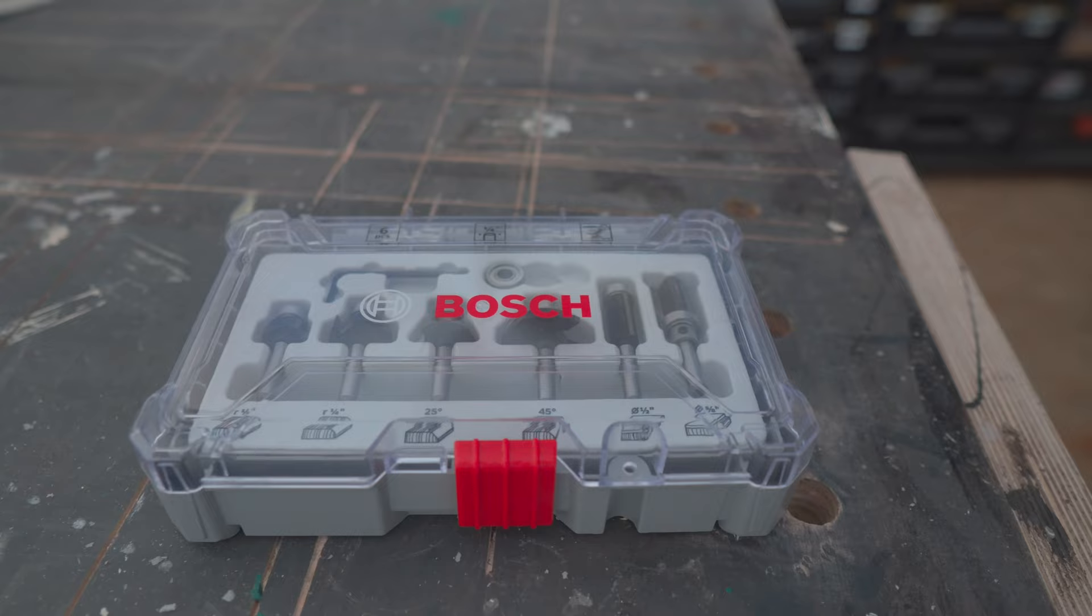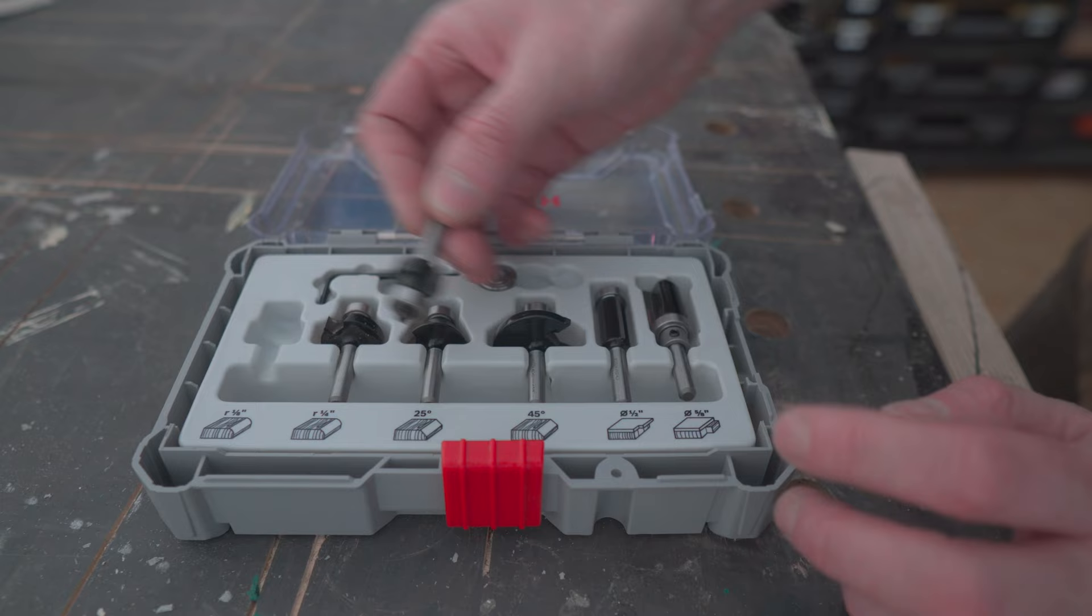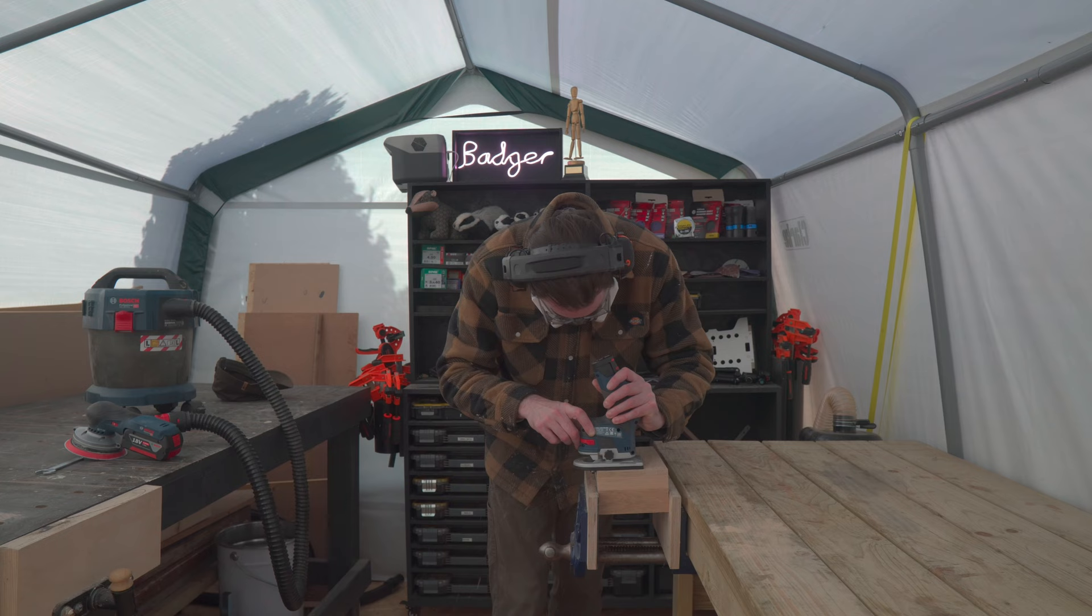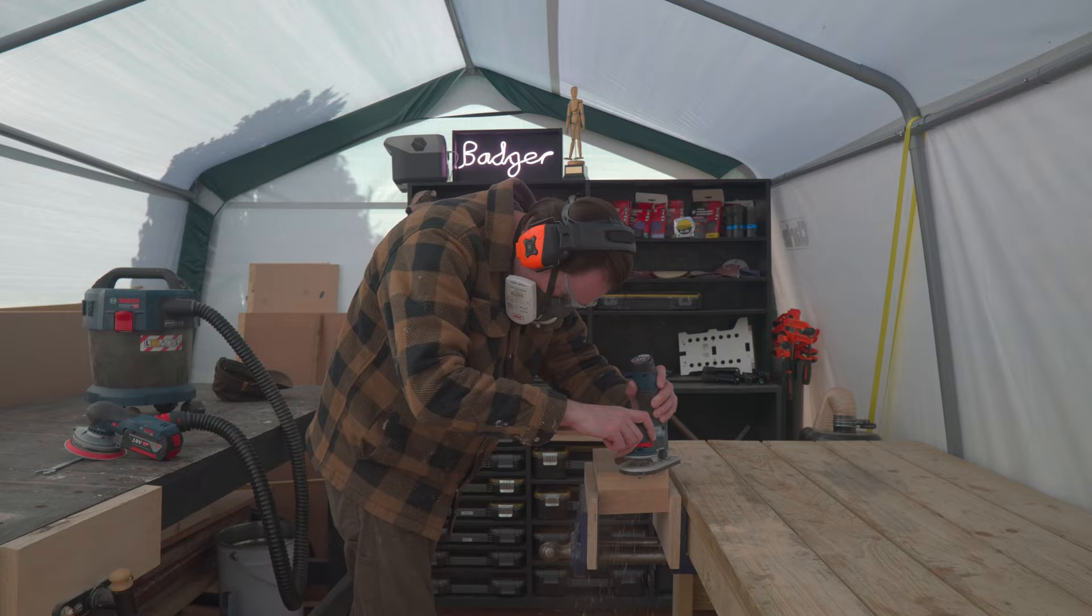Now, I want to add a round over to the top. So, I grab my smallest round over bit and get it put in my little Bosch 12 volt router. And then, I can go around the outside of the box, and I'm going to go around the opening as well to ease those edges.